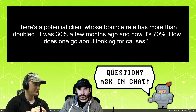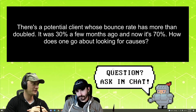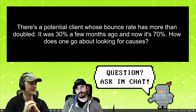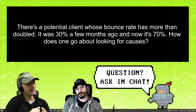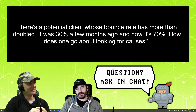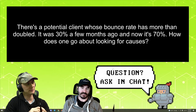There's a potential client whose bounce rate has more than doubled. It was 30% a few months ago and it is now 70%. How does one go about looking for causes? It's not really our specialty, but you'd be doing it by split testing.